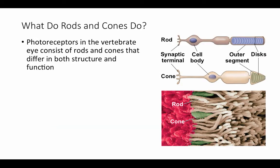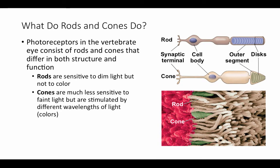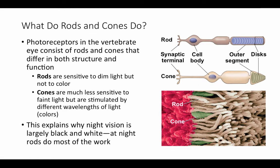Now let's take a look at the function of rods and cones. Photoreceptors in the vertebrate eye consist of rods and cones that differ in both structure and function. Rods are sensitive to dim light but not to color, whereas cones are much less sensitive to faint light but are stimulated by different wavelengths of color — it's the cones that give us our color vision. This explains why night vision is largely black and white: at night, rods do most of the work since they're very sensitive to very dim light, but it takes much stronger light to activate cones.